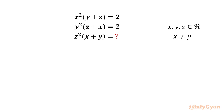Here we have to evaluate z squared times x plus y, if x squared times y plus z is 2 and y squared times z plus x is also 2, given that x, y, z belong to real numbers and x cannot be equal to y.